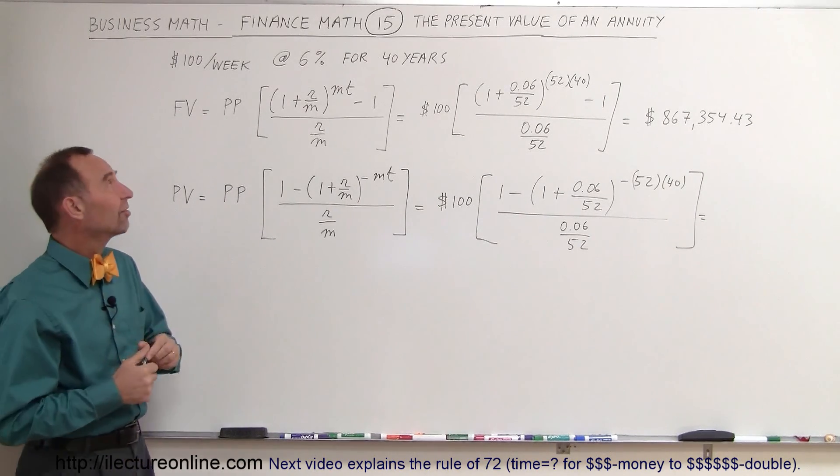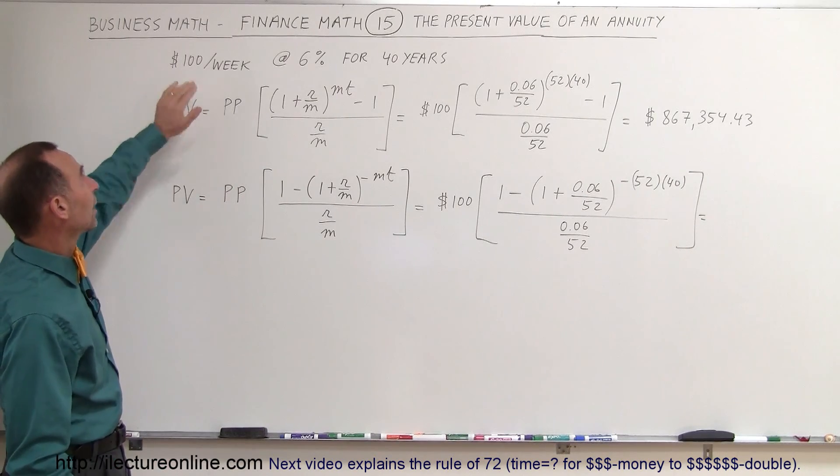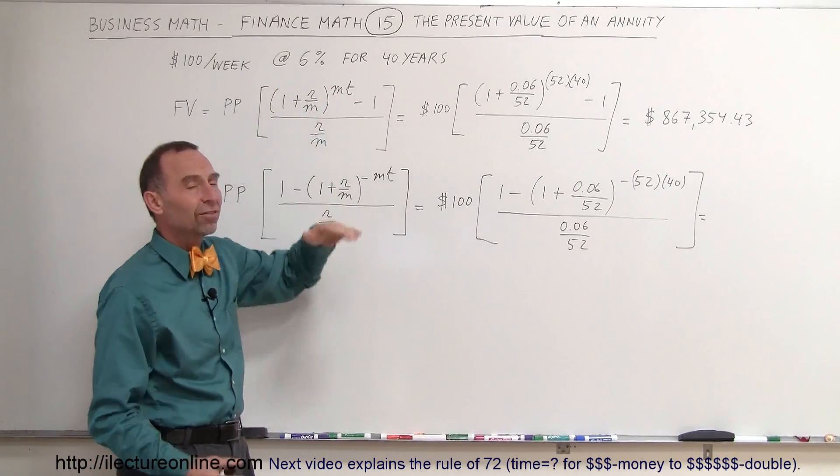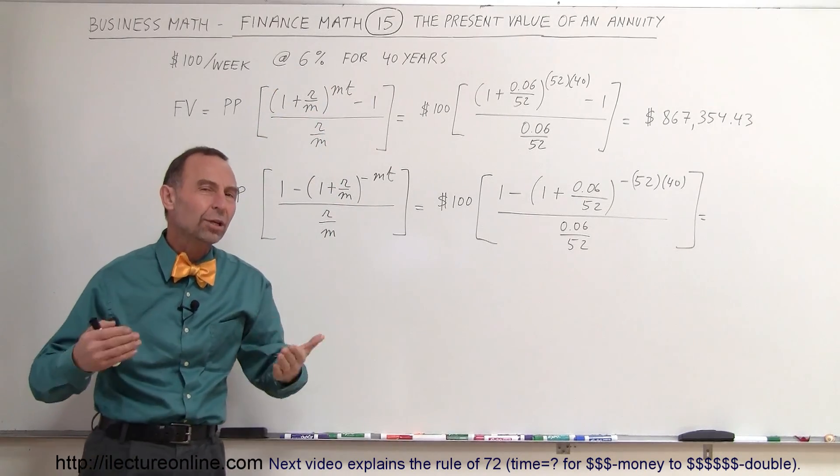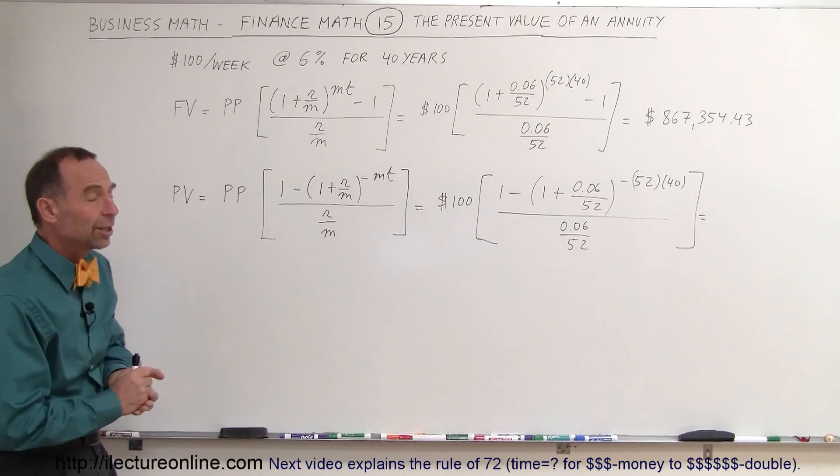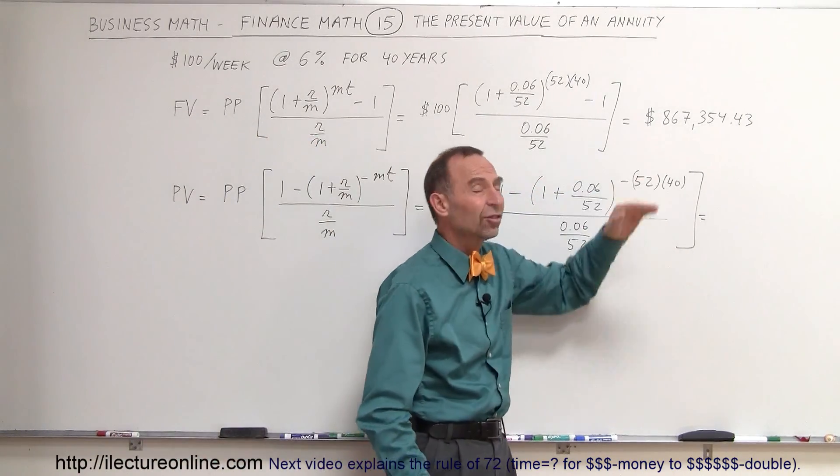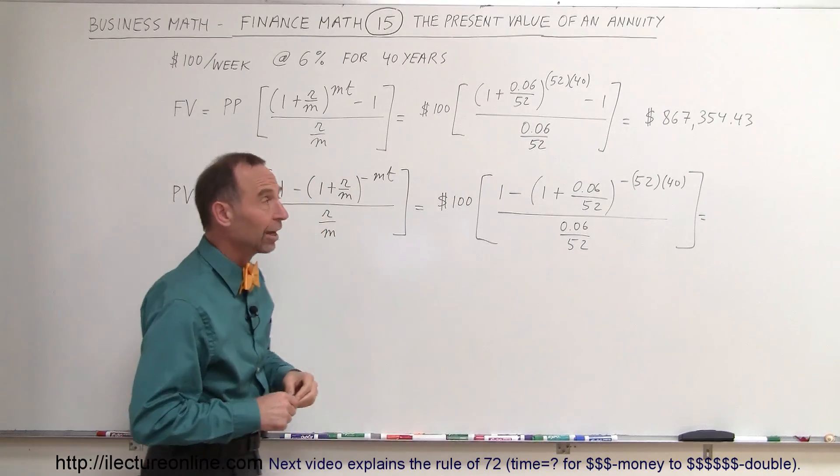In this example we take $100 per week out of our account, we invest at an average rate of 6%, and let's say we do this for 40 years. How much money will we end up with at the end of a 40-year period? As we saw in previous examples, in this case that would be $867,000, which is a nice retirement sum.